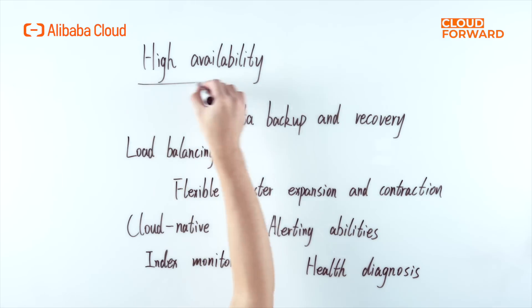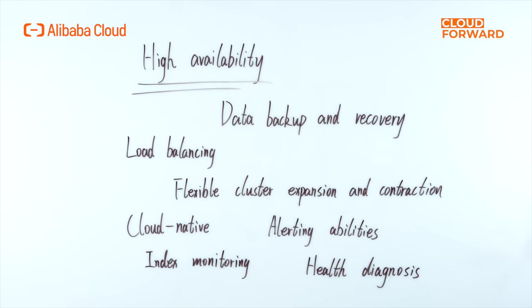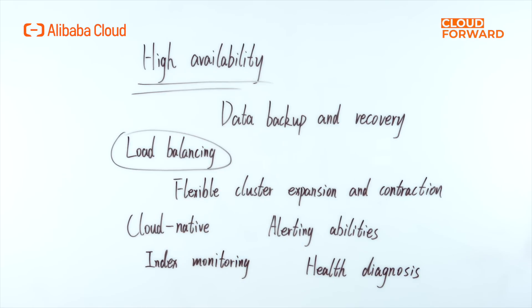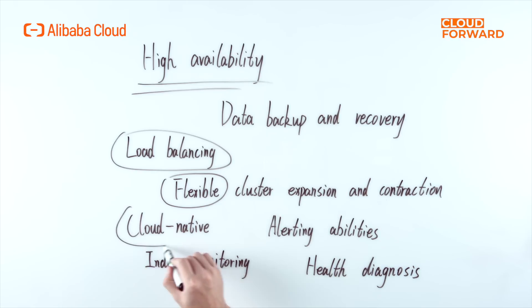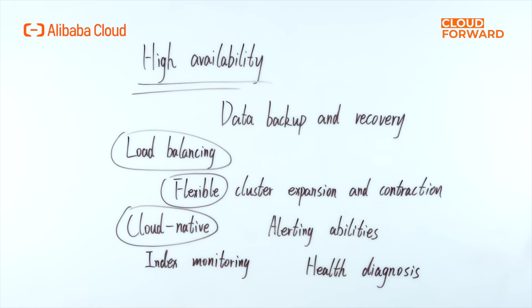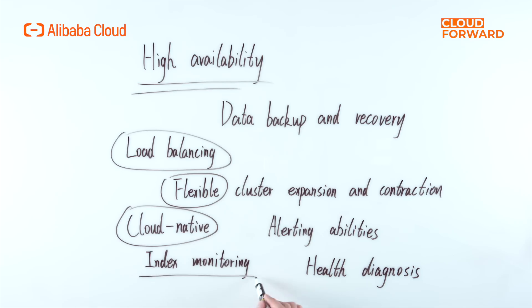In terms of high availability, Alibaba Cloud Elasticsearch offers data backup and recovery, load balancing, cross availability zone deployment, flexible cluster expansion and contraction to ensure smooth service availability, cloud-native enterprise operation and maintenance alerting abilities, and abilities to combine with the event center and intelligence inspection. It provides multi-dimensional index monitoring and health diagnosis services for clusters, nodes, indexes, etc., to ensure reliability of cluster data and service availability in all aspects.